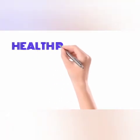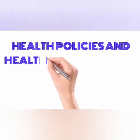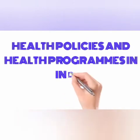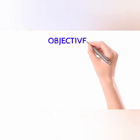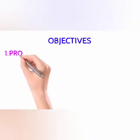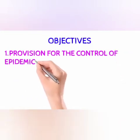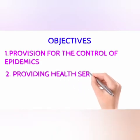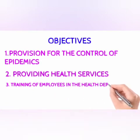Health policies and programs adopted in India. The Indian government, depending upon the recommendations from the Health Survey and Development Committee and Health Survey and Planning Committee, developed a program to improve the health standards of people in India. The objectives of the program are: provisions for the control of epidemics, providing health services and training of employees in the health department, and the development of primary health centers in the rural sector.